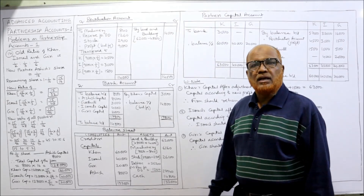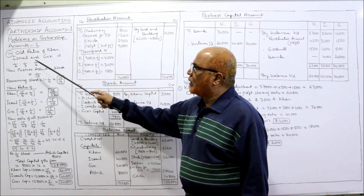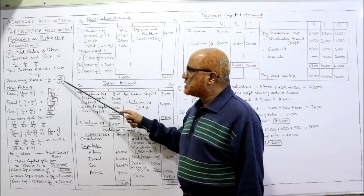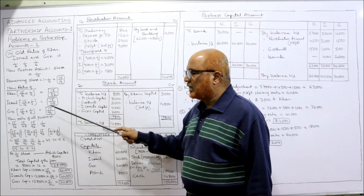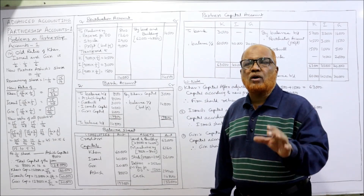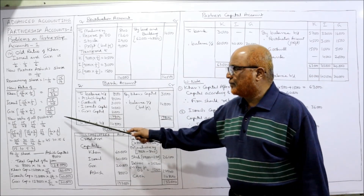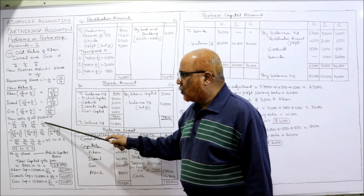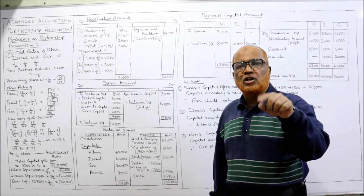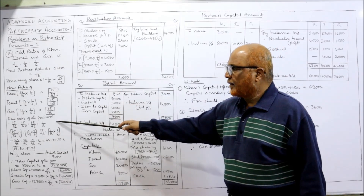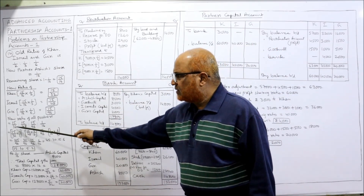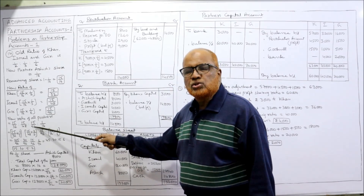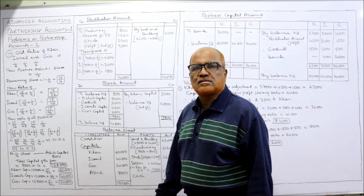Ismail's new share: 15/16 × 1/3 = 15/48. Giri's new share: 15/16 × 1/6 = 15/96. So the new ratio of Khan, Ismail, and Giri is 15/32 : 15/48 : 15/96, and Ashish's share is 1/16. The denominators are different — 32, 48, 96, 16 — and the highest value is 96, so we convert all denominators to 96.